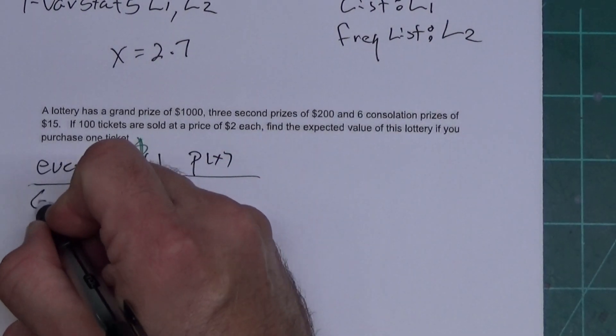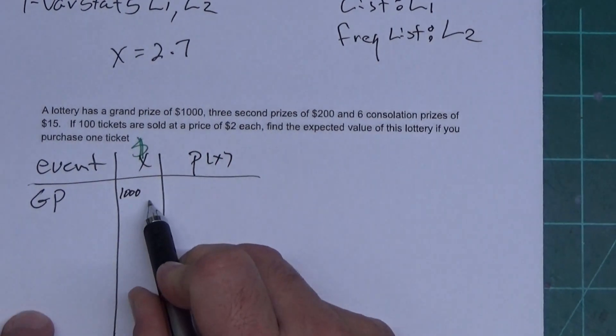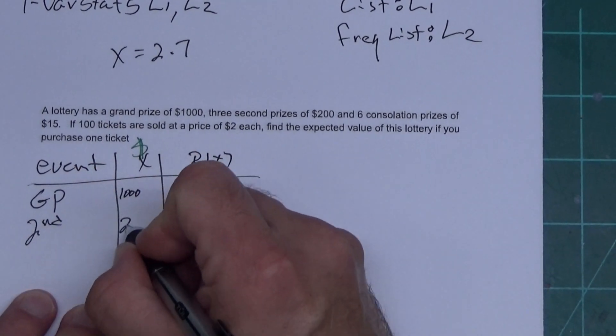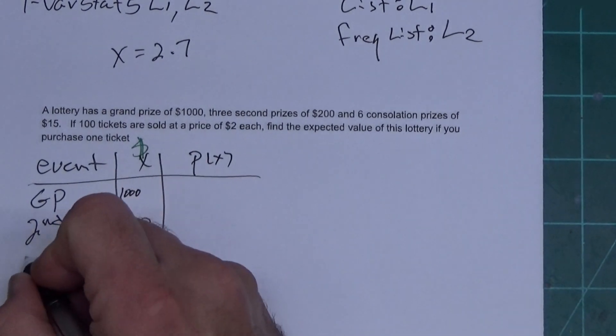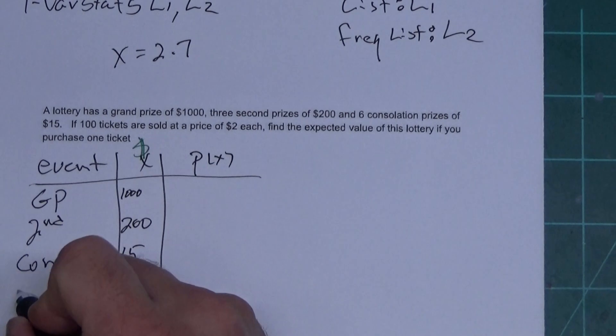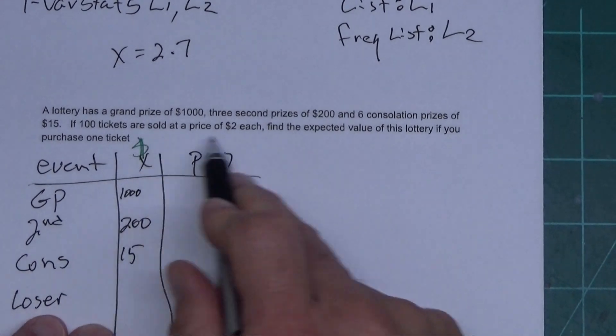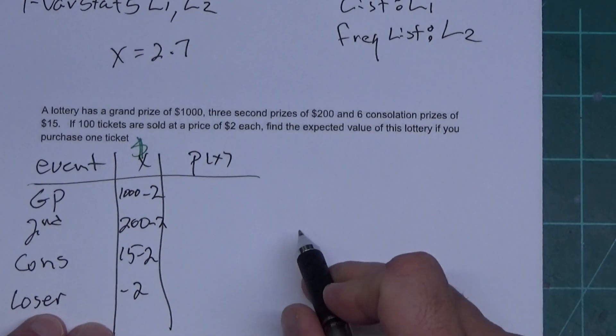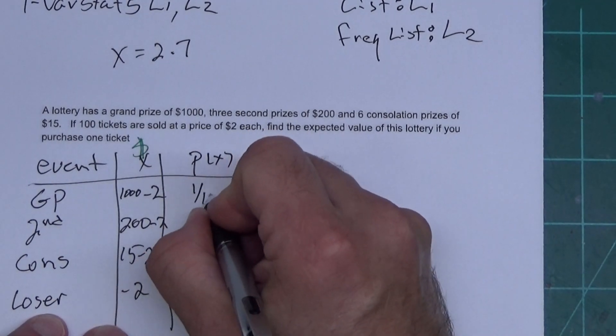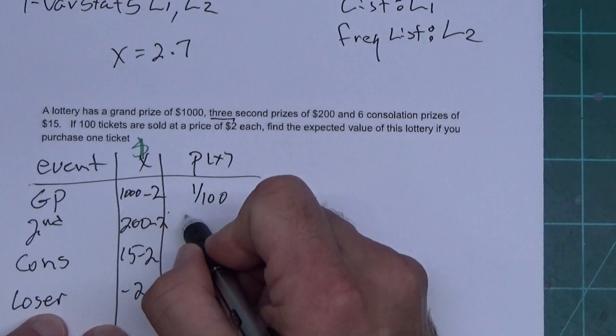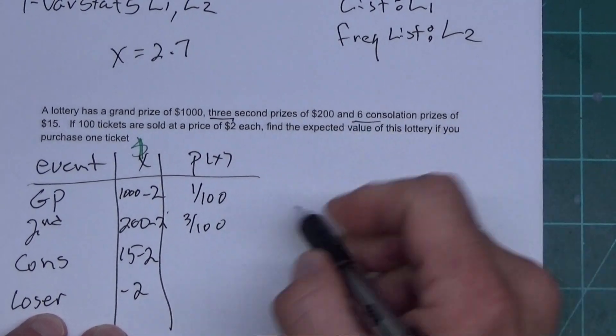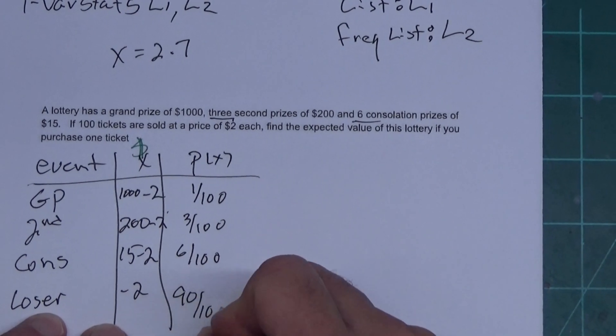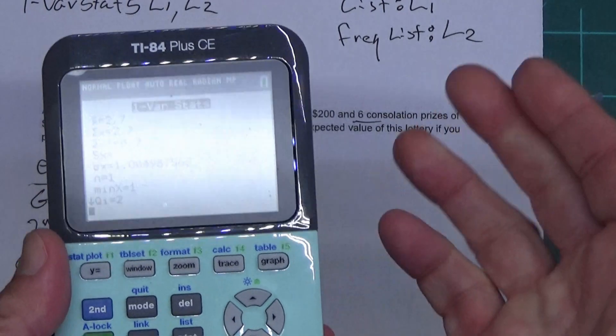The reason I'm setting this table up this way is I have a lottery problem, and I have money. I put my money in the X column. And the money isn't always associated with the outcome, so I like to have an outcome column as well. Now, we read it. It has a grand prize of $1,000, so I'm going to put grand prize here, and I'm going to put $1,000 here. Three second prizes of $200. Six consolation prizes of $15. And then, there's always losers in every lottery. They're sold at $2 each, so I have to subtract two from everything. And they sold 100 tickets. So, grand prize would be 1 out of 100. There were three second prizes, so this is 3 out of 100. There are six consolations, so this is 6 out of 100. And 1 plus 3 plus 6 is 10, so that means there's 90 losers out of 100. So, I have that set up.